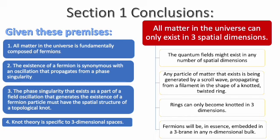Given those premises, we are led to the logical conclusion that all matter in the universe must exist in exactly three spatial dimensions. However many dimensions of space there might be in the bulk, all of the fermions can only exist in three dimensions. We are made of fermions, so we are observers embedded in three dimensions. All the matter in the universe — everything that can be seen and observed — is all made of fermions, and therefore can only be observed to exist in three dimensions. The observable universe is a three-dimensional membrane embedded in a higher dimensional bulk.